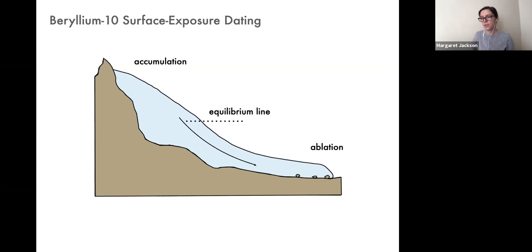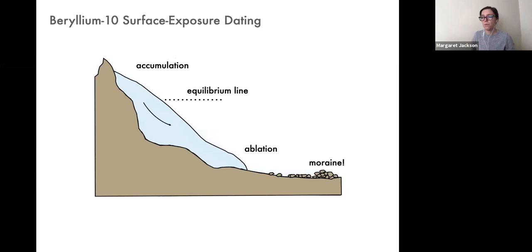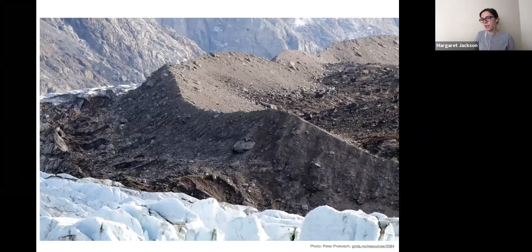As our glacier flows downslope, it will entrain boulders, cobbles, and all sorts of sediments, carrying them downslope and eventually depositing them along the glacial margin — building up a ridge over time. If climate changes and warms, the accumulation zone shrinks and the equilibrium line rises. The glacier retreats upslope to find a new steady-state geometry, and this sediment ridge — called a moraine — is abandoned.